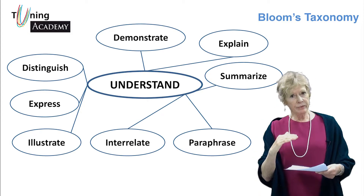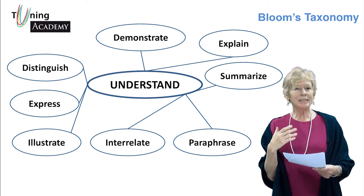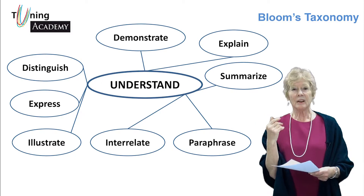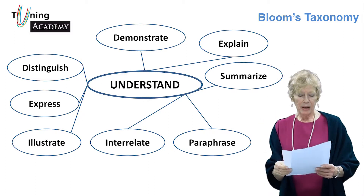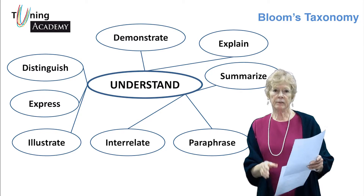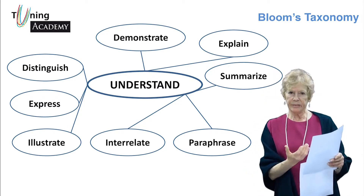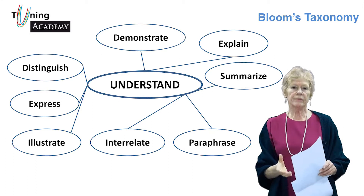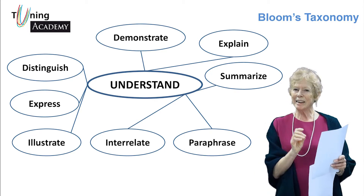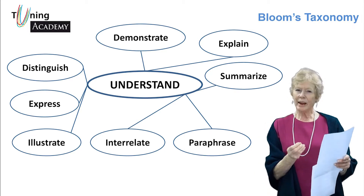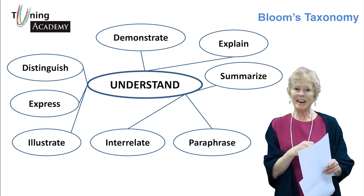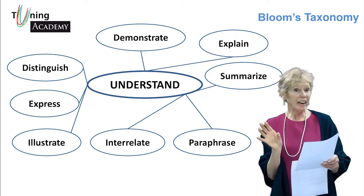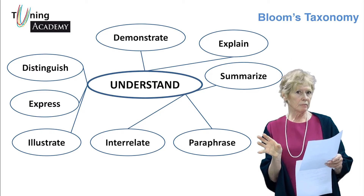The second level of complexity is understanding — not just remembering something, but understanding it. The vocabulary given in Bloom's taxonomy for this level includes words like distinguish between, explain, extend, give examples of, illustrate, etc.